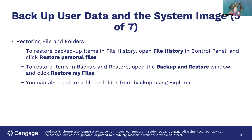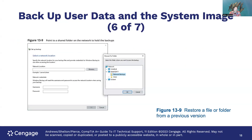To restore files and folders using File History, go back to File History and use the Restore Personal Files option. For Backup and Restore, open the Backup and Restore window and go to Restore My Files — it's pretty straightforward. You can also restore a file or folder from backup using File Explorer. You can specify a network location for doing a backup or restore.